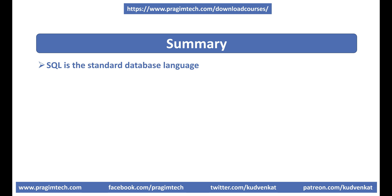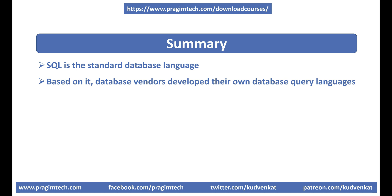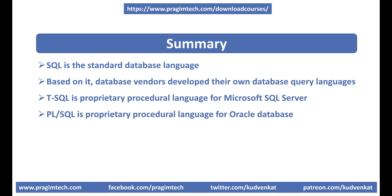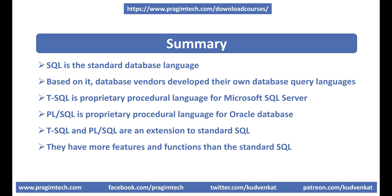Here is the summary. SQL is the standard database language. Based on this standard, database vendors like Microsoft, Oracle, and many other organizations developed their own query languages. T-SQL is a proprietary procedural language for working with Microsoft SQL Server. PL-SQL is a proprietary procedural language for working with Oracle database. T-SQL and PL-SQL are extensions to standard SQL, meaning they have more features and functions. For example, local variables are added, many built-in functions are added for processing strings, numbers, dates, and other data types, and they also added the capability to write stored procedures. These procedural languages help us write queries easier, quicker, and more efficiently.